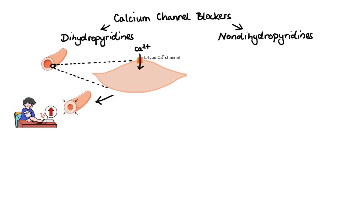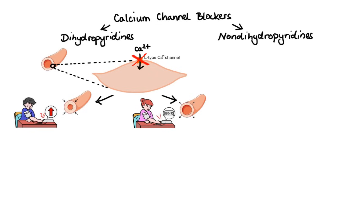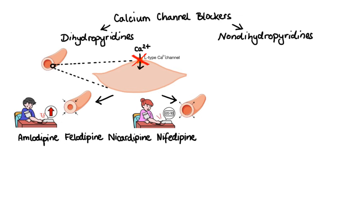So when a dihydropyridine drug blocks the entry of calcium into the vascular smooth muscle cell, contraction is inhibited, which leads to decreased resistance to blood flow and thus lowering of blood pressure. Examples of drugs that belong to this group are amlodipine, felodipine, nicardipine, and nifedipine.